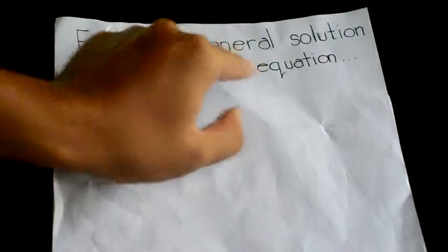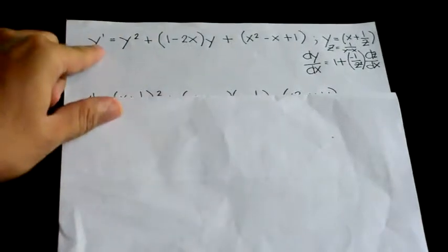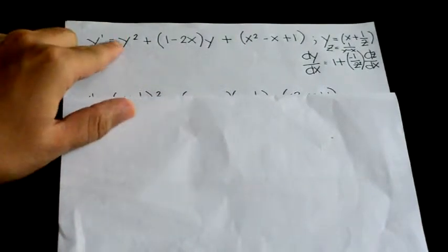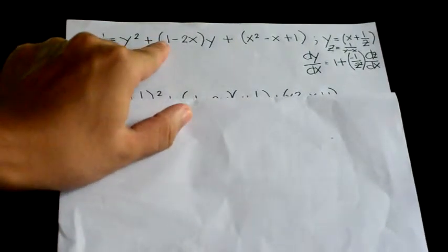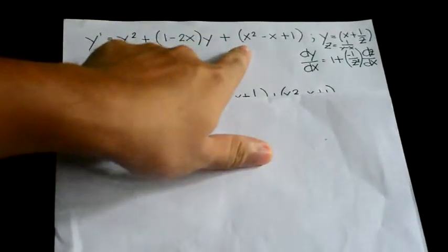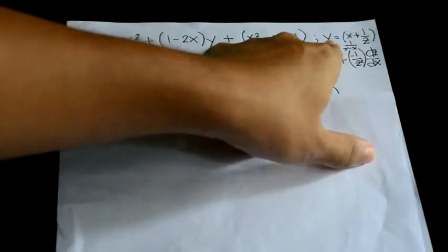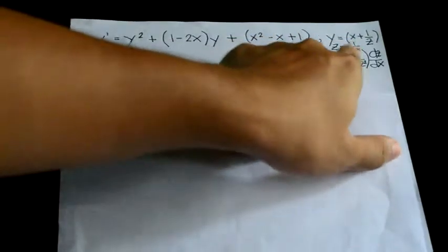Hi, I'm going to be showing you how to find the general solution of the given equation. The given equation is y prime is equal to y squared plus 1 minus 2x times y plus the quantity x squared minus x plus 1. The given substitution condition is y is equal to x plus 1 over z.